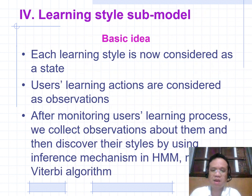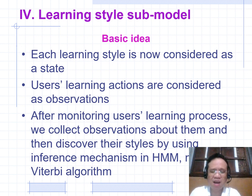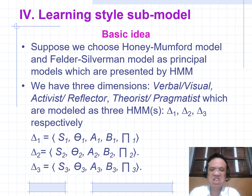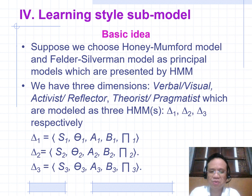The Viterbi algorithm is used to model the Learning Style submodel using the Hidden Markov Model. Learning style is considered as a hidden state, while user learning actions are considered as observations. After monitoring the user learning process, observations are collected and the learning style is discovered using the inference mechanism in HMM — namely the Viterbi algorithm. A Felder-Silverman model is represented by HMM with three dimensions: verbal-visual, active-reflective, represented by three HMMs.